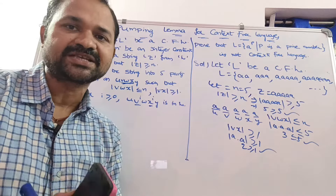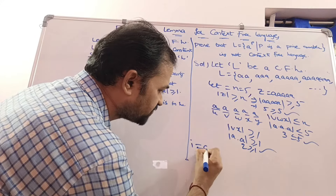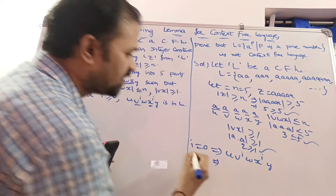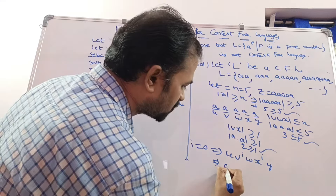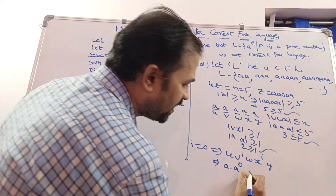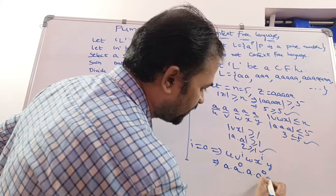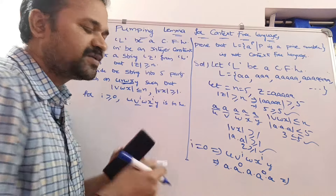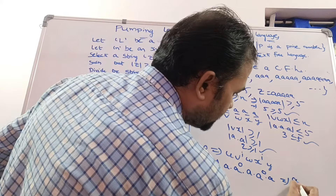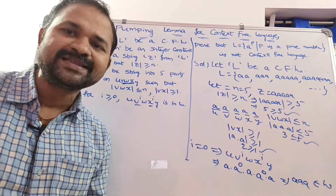For i ≥ 0, we check u·v^i·w·x^i·y. Starting with i = 0: u·v^0·w·x^0·y = a·ε·a·ε·a = aaa = a^3. Since 3 is a prime number, a^3 is present in the language.